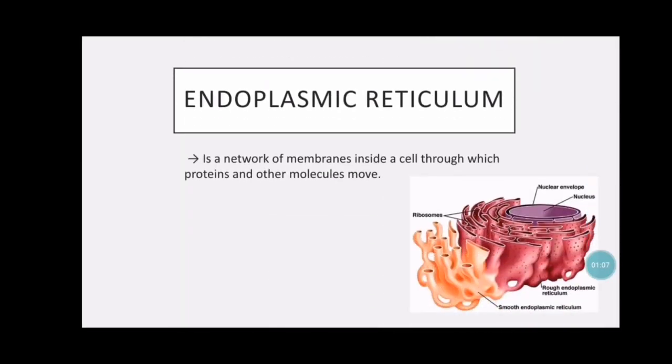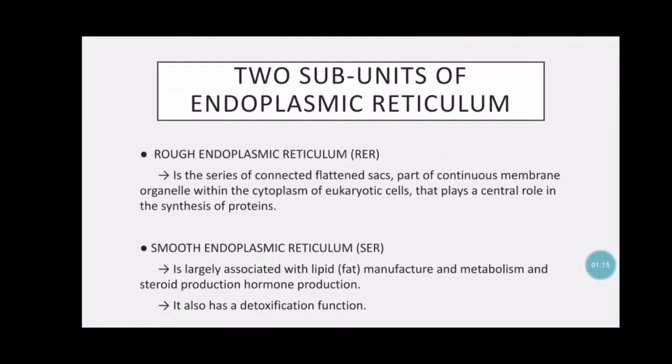Endoplasmic reticulum is a network of membranes inside a cell through which proteins and other molecules move. There are two subunits. Number one is rough endoplasmic reticulum, which is a series of connected flat membranes — a continuous membrane organelle within the cytoplasm of eukaryotic cells that plays a central role in the synthesis of proteins.